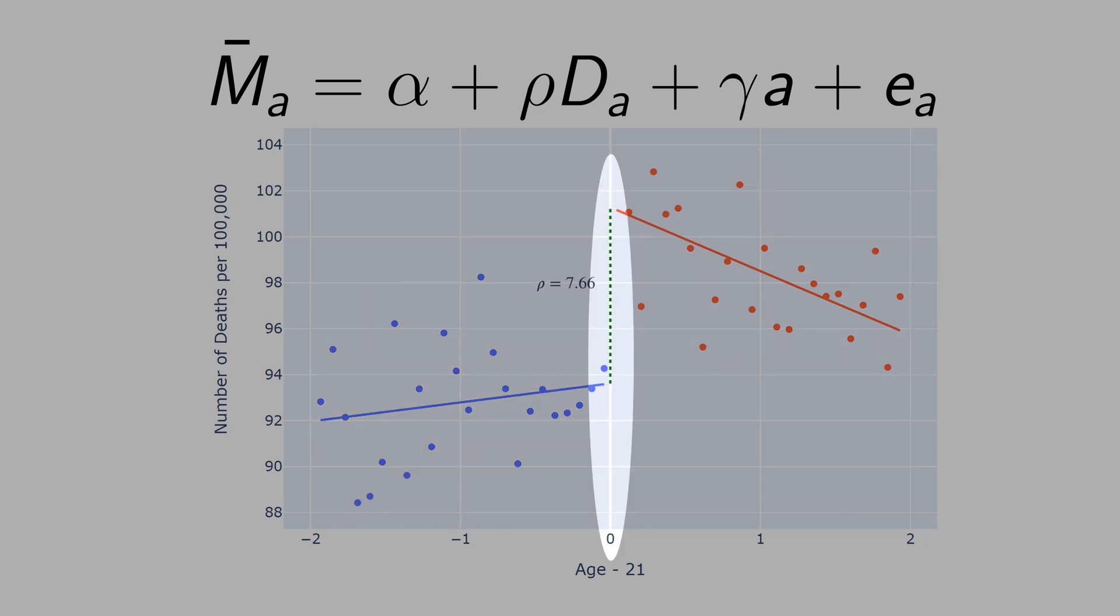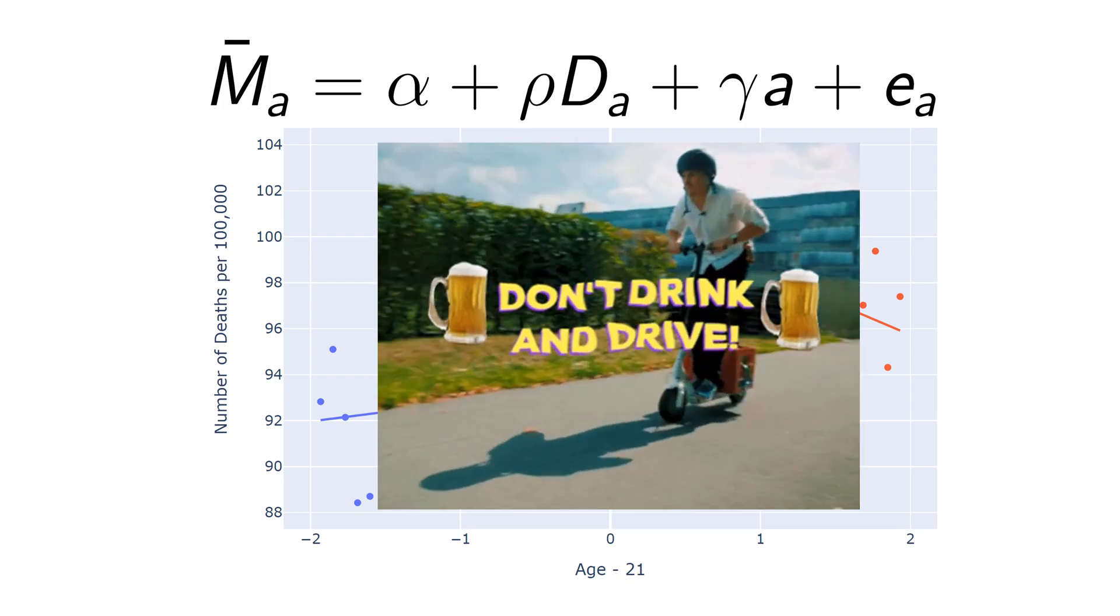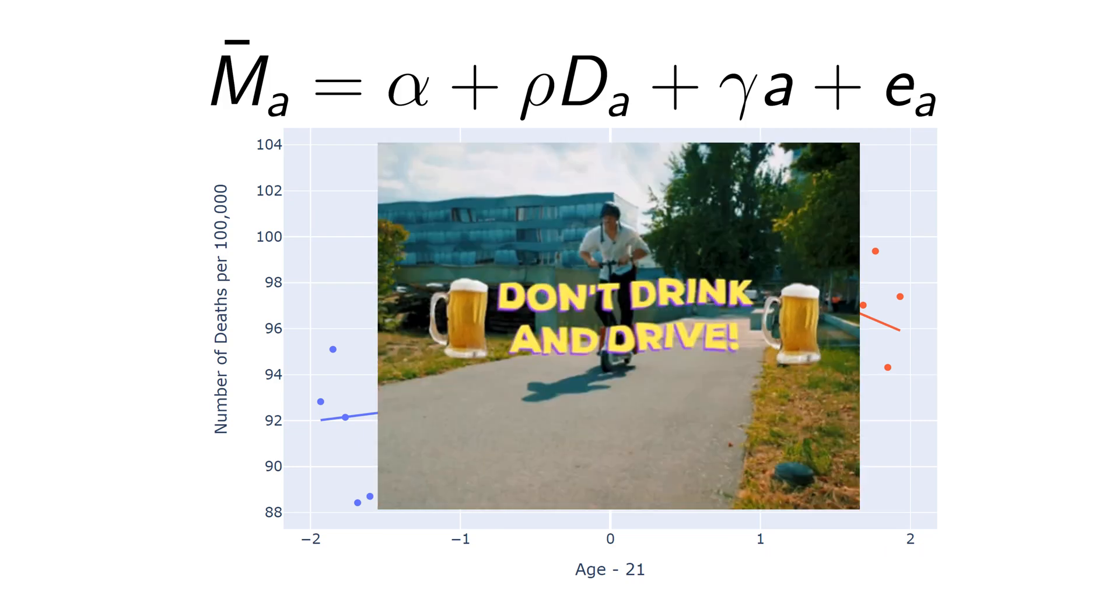The question is, are you programmed to die when you complete 21 years old? In United States, you can drink after 21 years old. And in the day of the birthday, people just go crazy. They drink alcohol.